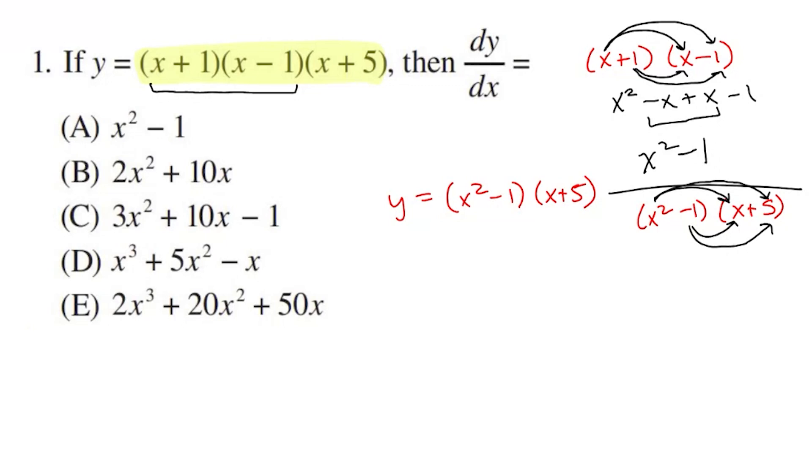x squared times x is x cubed. x squared times 5 is going to be 5x squared. Negative 1 times x, negative x. And negative 1 times 5 is negative 5. I don't have any like terms to combine there, so that's it. So now we can rewrite y as x cubed plus 5x squared minus x minus 5.